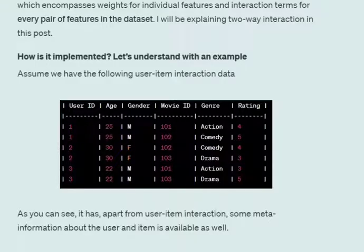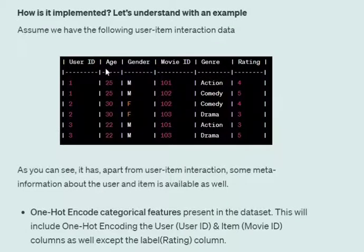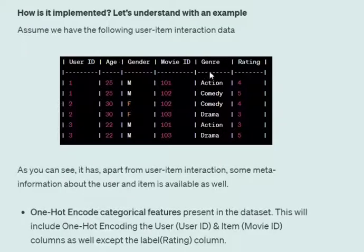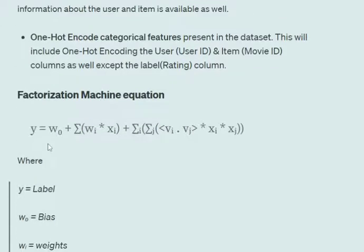To understand how a Factorization Machine is implemented, assume a dataset with columns: user ID, movie ID, age, gender, genre, and rating. Apart from the user-item interaction (user ID, movie ID), we have features from the user and movie as well, and rating is our label. We convert all categorical variables — user ID, movie ID, gender, genre — into one-hot encoding. We don't convert the age or rating columns since they are already numerical (whole numbers).